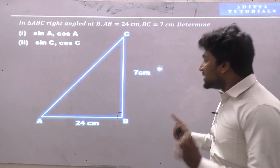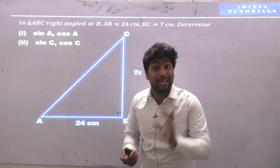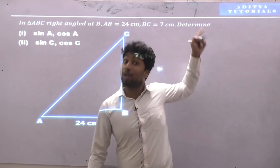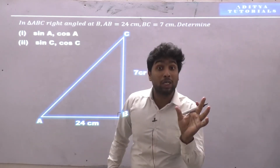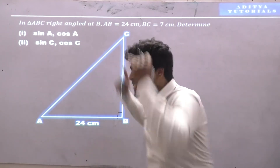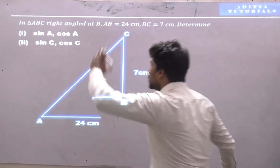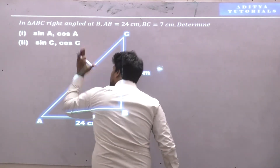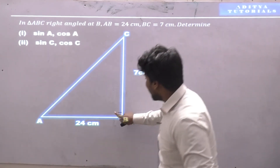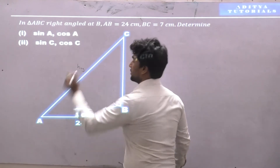Now, for sine A, I need the hypotenuse. Sine theta is opposite upon hypotenuse, and cos theta is adjacent upon hypotenuse — as explained in my introduction video. That means to find sine theta and cos theta, I need the hypotenuse. The hypotenuse is the side opposite the 90 degree angle.